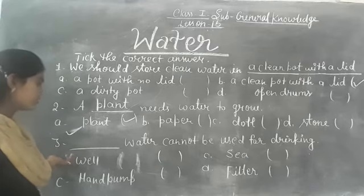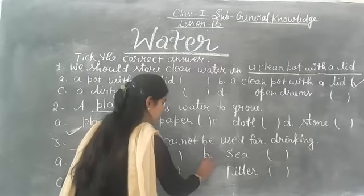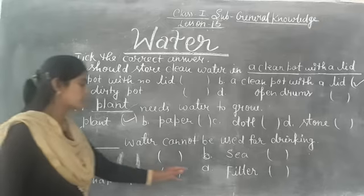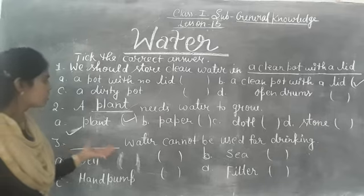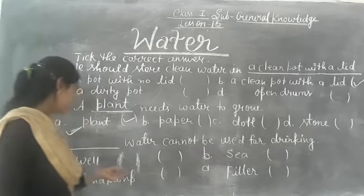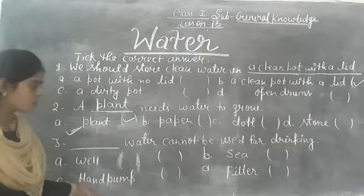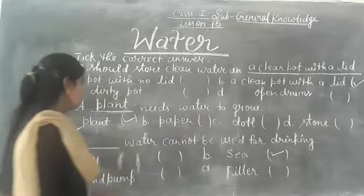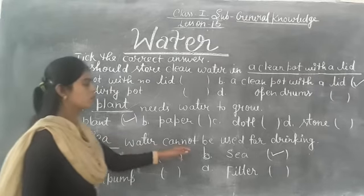Water cannot be used for drinking. Option A is well, option B is shape, option C is hand pump, option D is filter. C — water cannot be used for drinking.